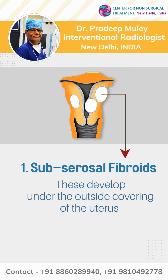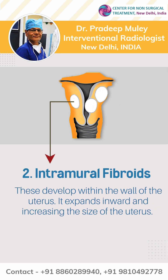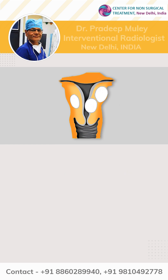Subserosal fibroids: These develop under the outside covering of the uterus. Intramural fibroids: These develop within the wall of the uterus and expand inward, increasing the size of the uterus.